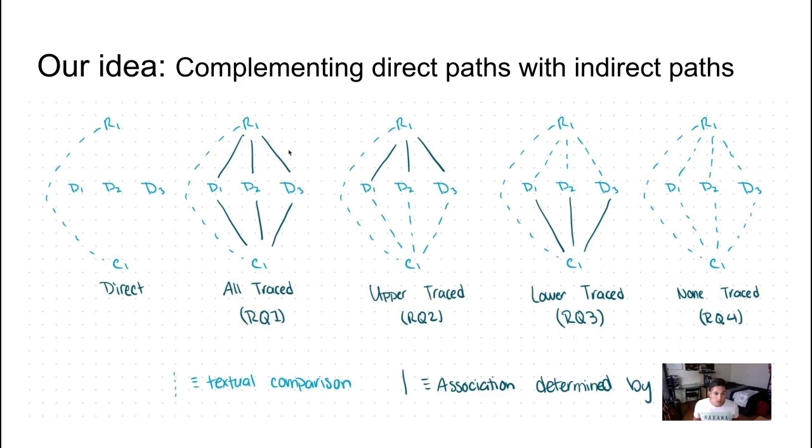The different colors represent whether the computer is guessing or whether those traces were given. This dark bold line represents traces that have been given to us by the software project leads. These are verified sources that these documents are associated. In this case, requirement one is directly associated with design one and similarly design one with class one. We call these oracles which basically boils down to being secured by the project leads.